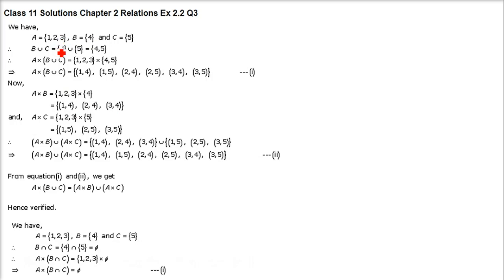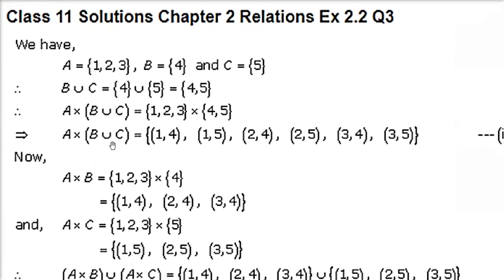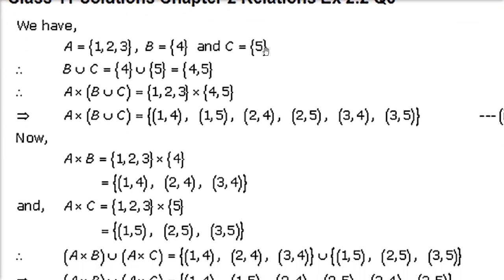A is given as 1, 2, 3; B is 4; and C is 5. Now we have to verify whether A cross (B union C) is equal to (A cross B) union (A cross C). B union C means {4, 5}. So A cross (B union C) is {1,2,3} cross {4,5}, giving: (1,4), (1,5), (2,4), (2,5), (3,4), (3,5).